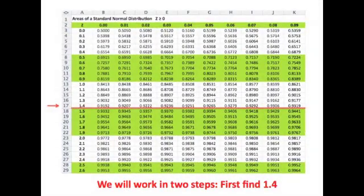In order to locate an area for a z-score of 1.45, we will work in two steps. First, we have to start with locating 1.4. That's the first phase.